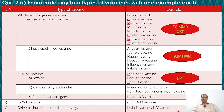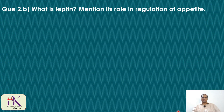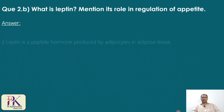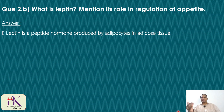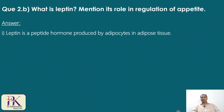Let's see the second question: what is leptin? Mention its role in regulation of appetite. Leptin is a peptide hormone produced by adipocytes in adipose tissue. There are various adipokines produced in adipose tissue, and one of them is leptin.